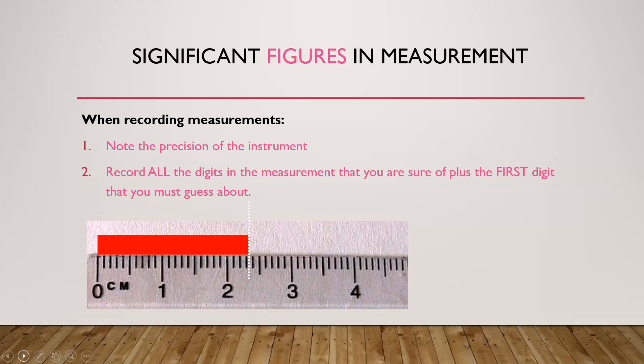Following the principle outlined previously, we also record the first digit that we have to guess at. Based on the spacing of the scale divisions on the ruler, we can guess this digit to be 5, representing 5 hundredths of a centimeter or 0.05 centimeters. So, we record the length of the object as 2.35 centimeters.